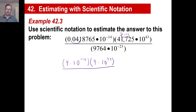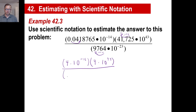And then 9, 7, 6, 4 — that'll be just 10,000, right? 10,000 — move over 3 times. It'll be 1 times 10 to the — excuse me, over 3 times. So we'll add 3 to the negative 23, which will give us a negative 20.